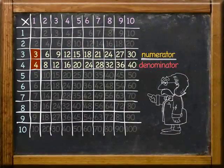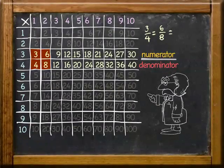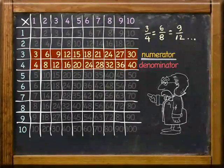As you can see, 3 fourths is equal to 6 eighths, which is equal to 9 twelfths, and so on across the columns.